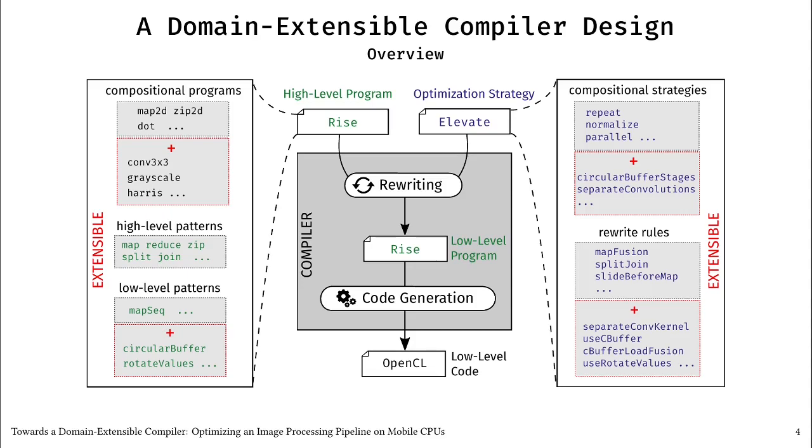On the left, computations are expressed as compositions of extensible and reusable patterns in RISE. Some patterns are high-level, which means that they define semantics but do not have any implementation. Other patterns are low-level and have a clear implementation. On the right, optimizations are expressed as compositions of extensible and reusable rewrite rules in Elevate. This extensibility allows us to add new optimizations without redesigning the compiler. New patterns, rewrite rules and strategies can be introduced for a specific domain, a specific hardware target, or even for a specific program.